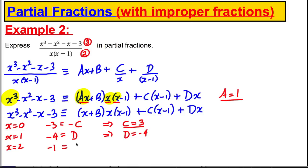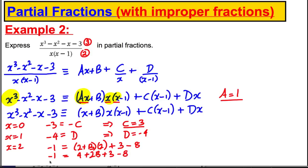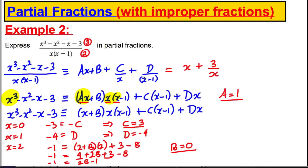Substituting x = 2 on the left gives −1. On the right: (2 + b)·2·1 + 3·1 + (−4)·2 = (2 + b)·2 + 3 − 8 = 4 + 2b − 5 = 2b − 1. So −1 = 2b − 1, giving b = 0. Therefore the answer is x + 3/x − 4/(x−1).